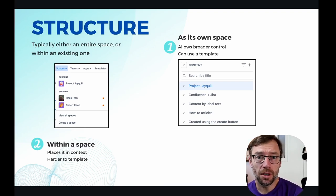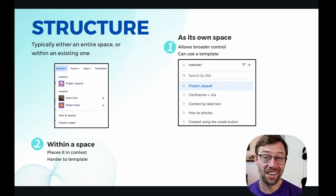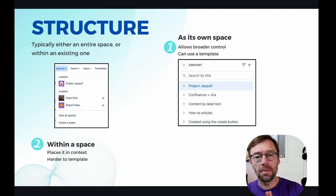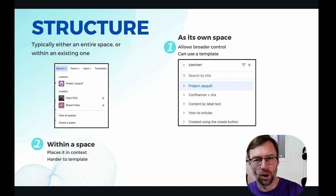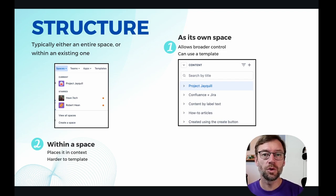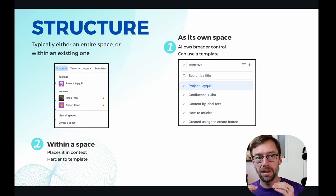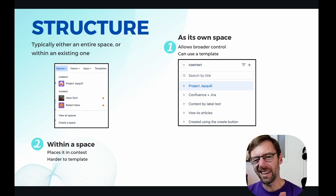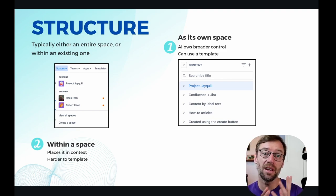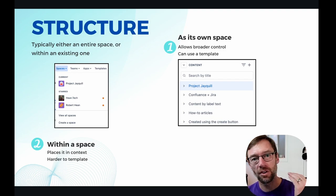One of the first things I need to consider as a project manager is how will I structure all of my information in Confluence? There are two main decisions: I can pick my own space in Confluence, which is similar to a room in a library where I can organize things separately, or I can put it within another space. I typically use my own space when the project is pretty big or if there are special considerations around access controls, since spaces give me more abilities to control who can see and do things.